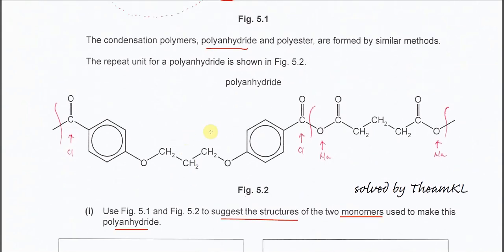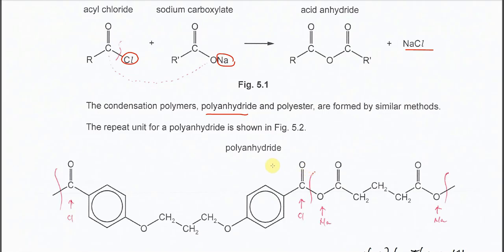And another figure is given, the condensation polymer polyanhydride which is Figure 5.2, and the polyester are formed by similar method. The repeat unit for the polyanhydride is shown in Figure 5.2. So now, use Part 1, use Figure 5.1 and 5.2, suggest the structure for two monomers used to make this polyanhydride. So you have to compare Figure 5.2 and Figure 5.1. Look carefully, what are the monomers that are involved? First, let's start with this anhydride bond.